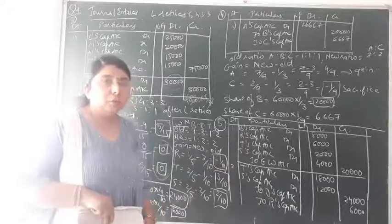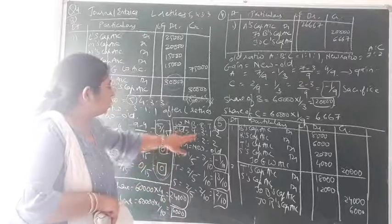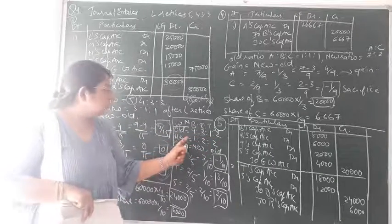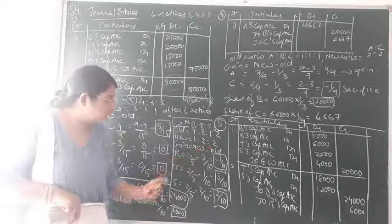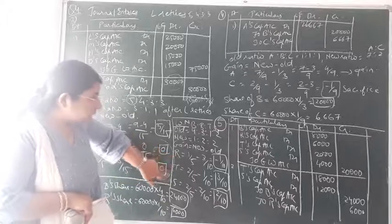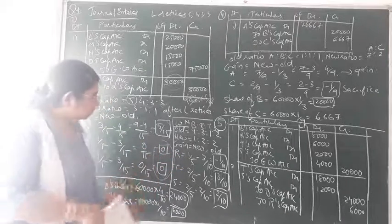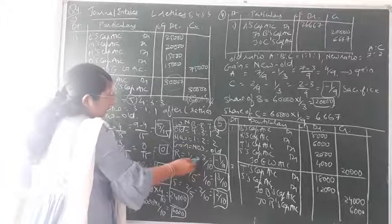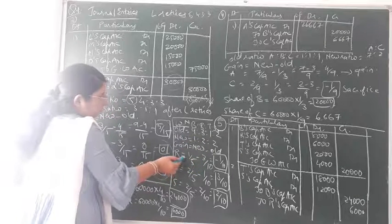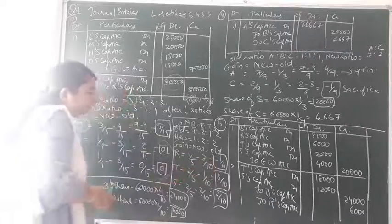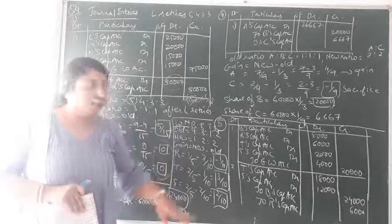For the new goodwill we have to find the gaining ratio. Both ratios are given: old ratio 4:3:1:2 and new ratio 1:2:2 (for R, T and S). Using the gain formula — new share minus old share — for R: new share 1/5 minus old share 3/10. Taking LCM as 10: 2/10 minus 3/10 = negative 1/10. Since the answer is negative, partner R is sacrificing.